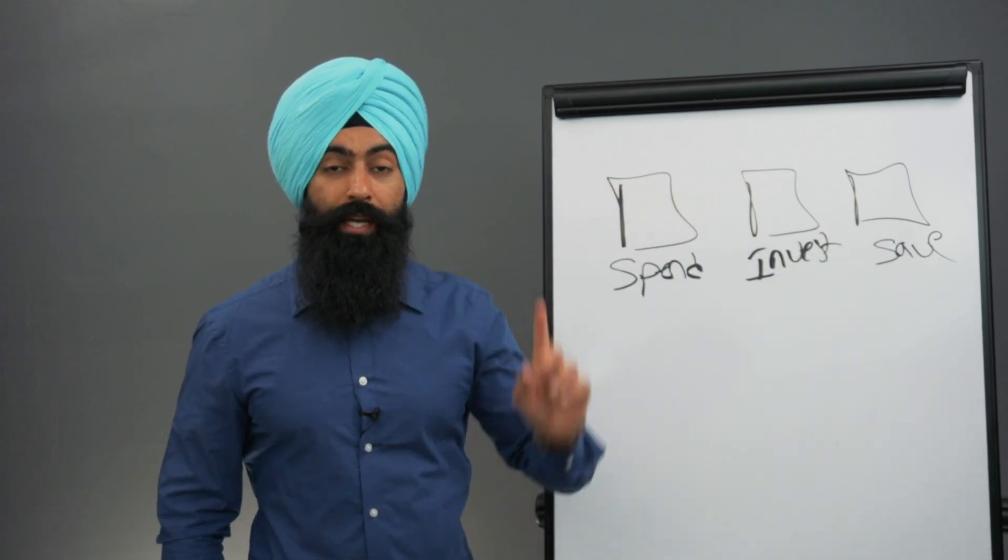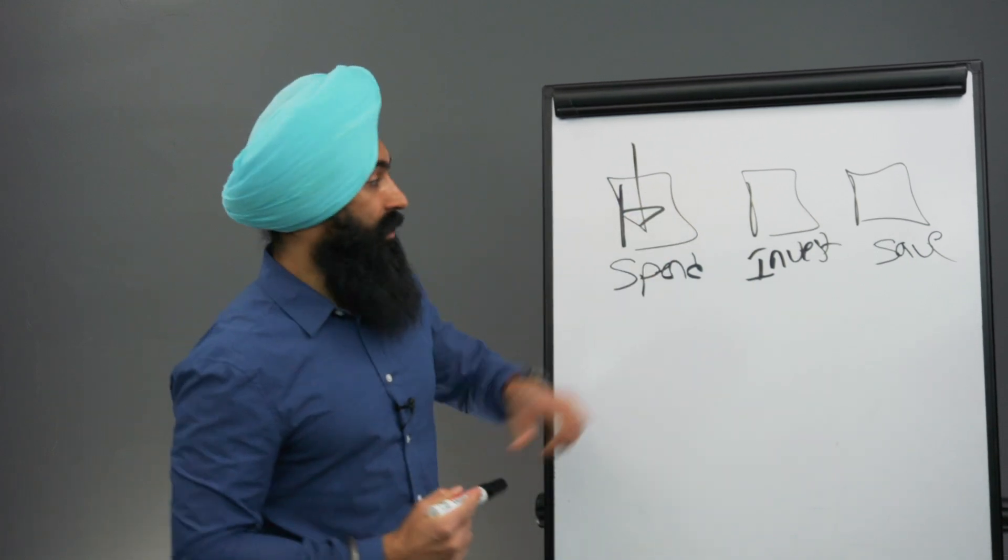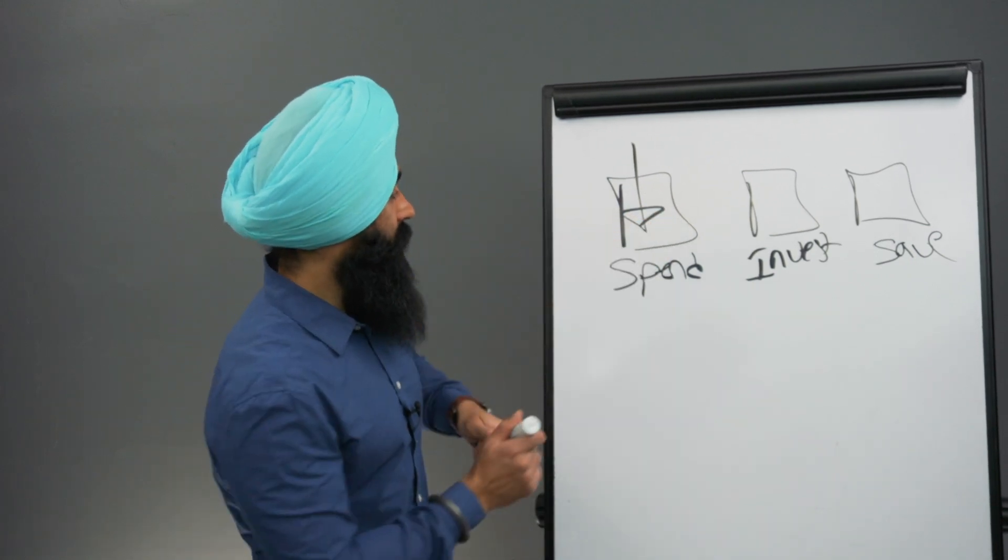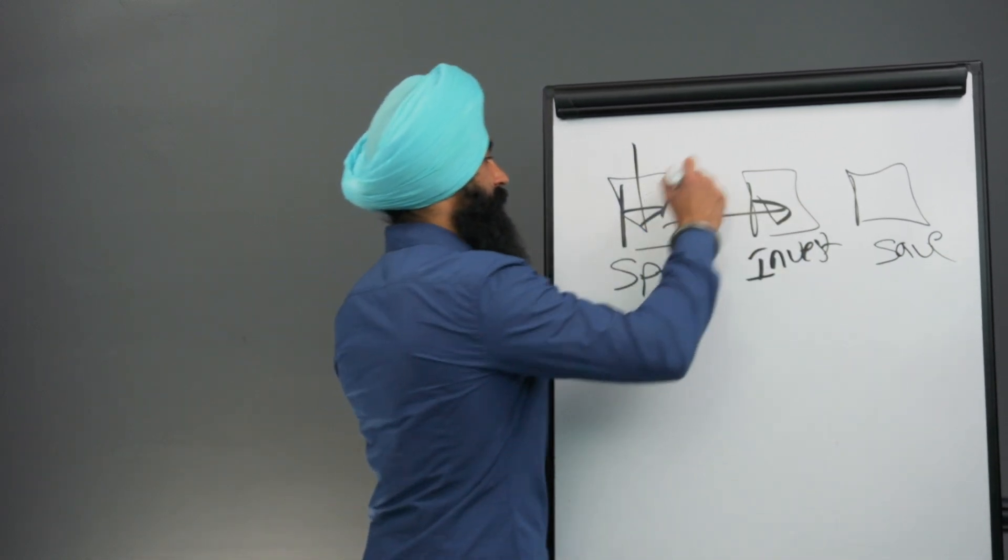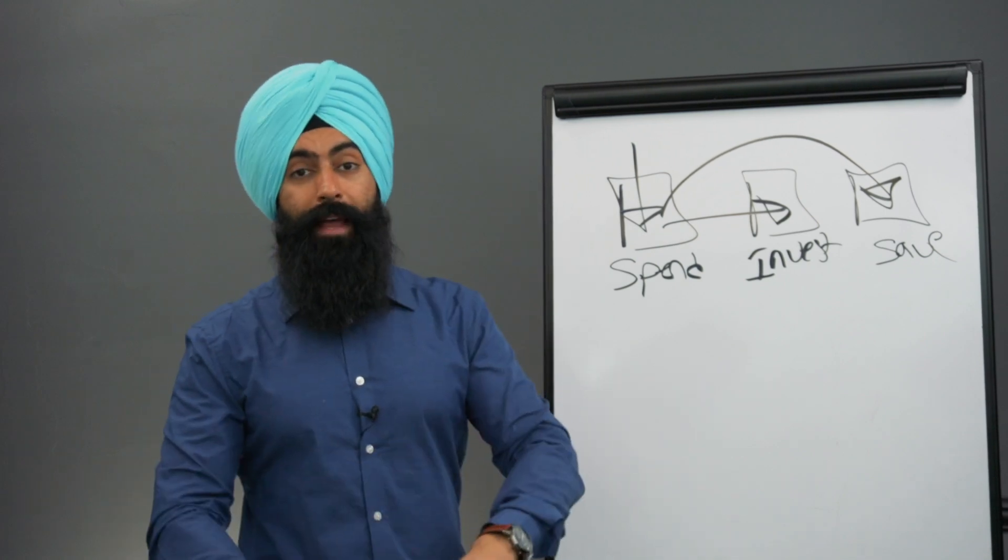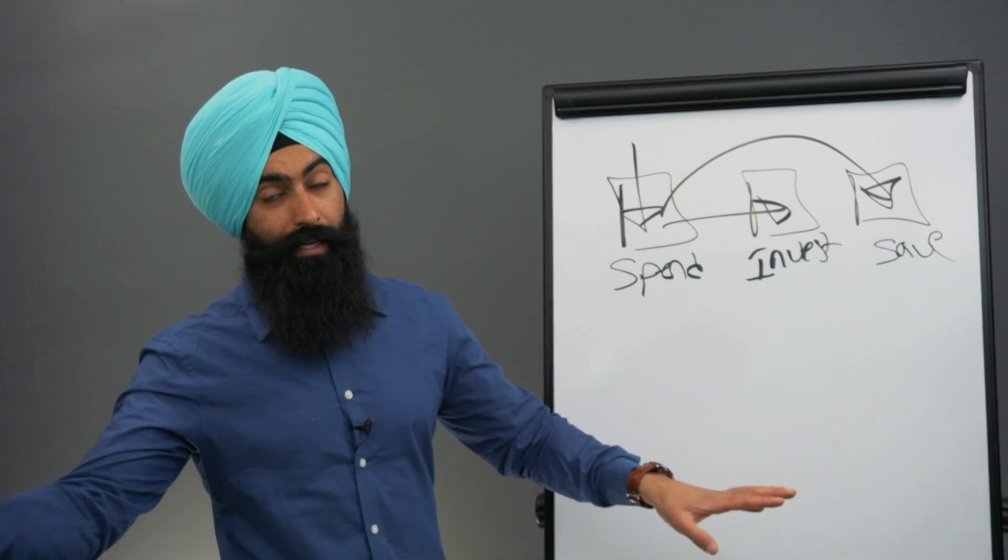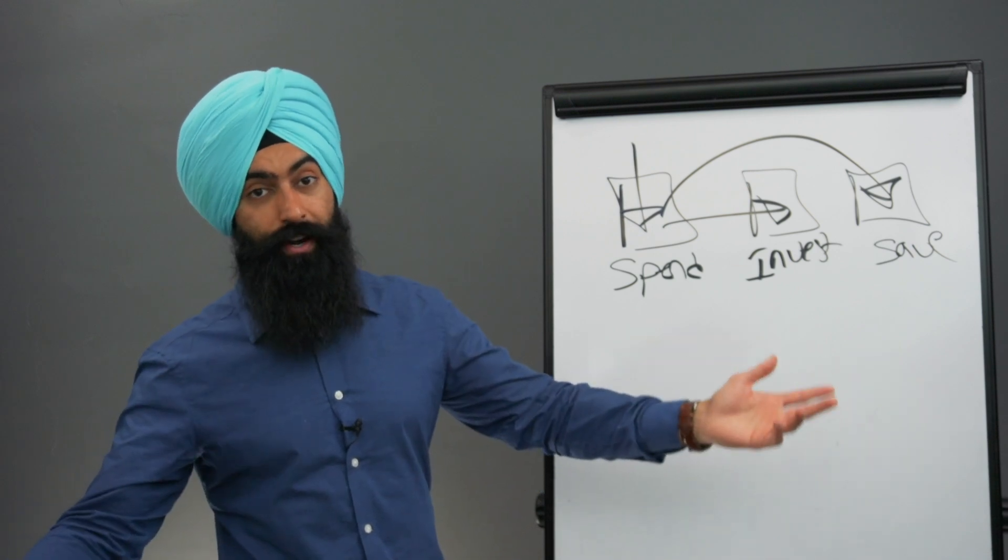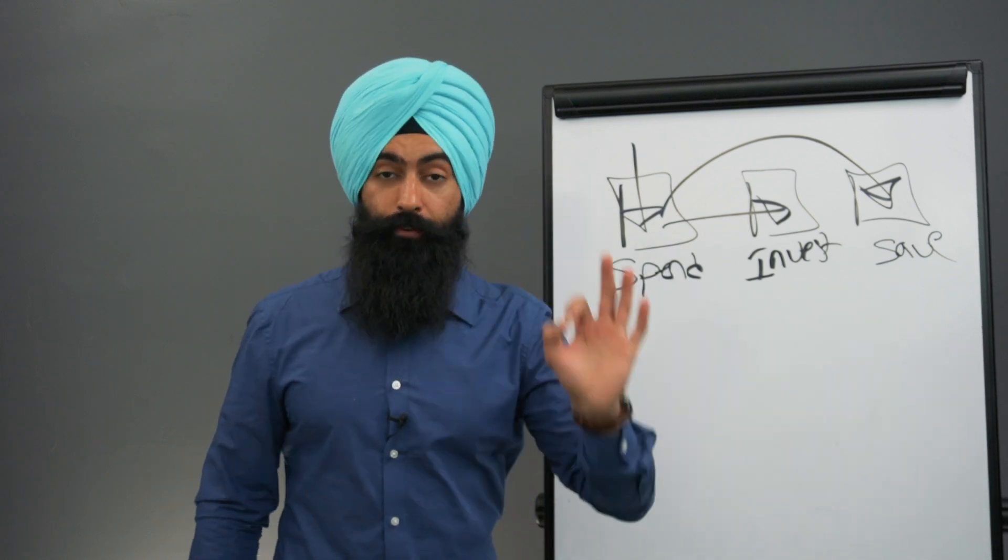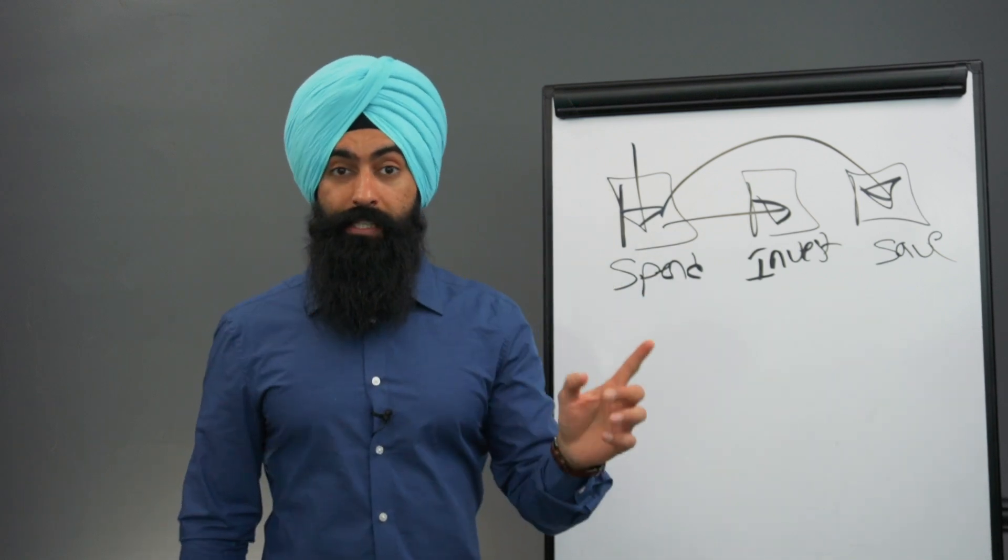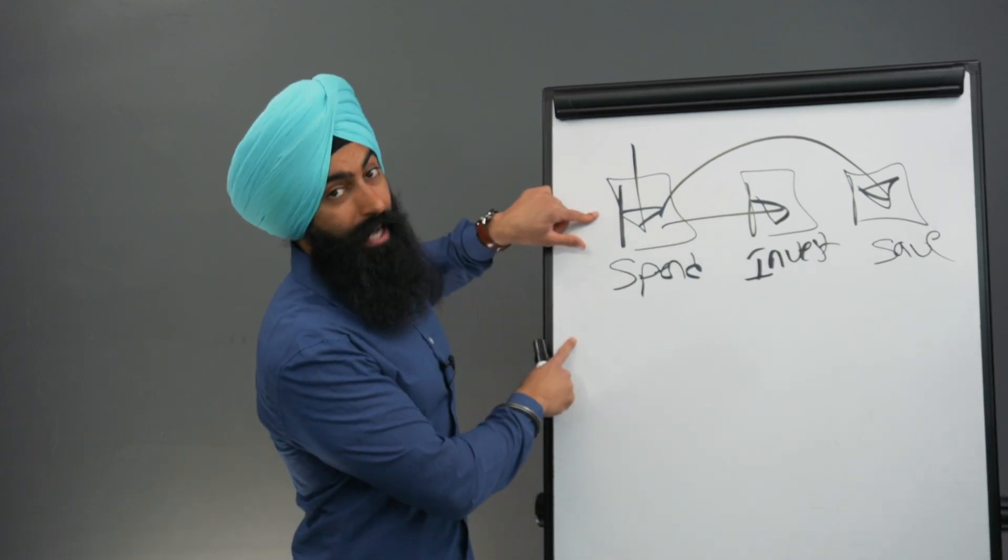And now what you want to do is anytime you get paid, your money is going to go here. But then as soon as your money goes into this bank account, you want to automatically take some of this money and move it into this bank account, and automatically take some of this money and move it into this bank account. Many banks will automate this process for you for free. If you don't have a bank that allows you to do that, maybe you look for new banks in your area that will allow you to do that. But a lot of banks will allow you to create an automation like this completely free. And now you have a system of knowing this is the money that you can spend. If there's no money in here, you have no money to spend.